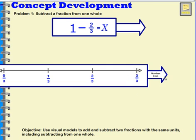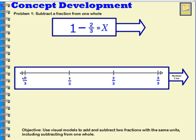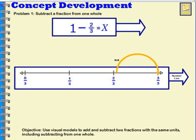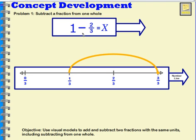To solve for that unknown part, let's use a number line broken up into three parts. I have one whole, so I'm going to represent that with a dot here — this is one whole. Now I will go backwards on my number line one third, two thirds. That shows that one third is my answer. So one third plus two thirds equals one whole, or three thirds.